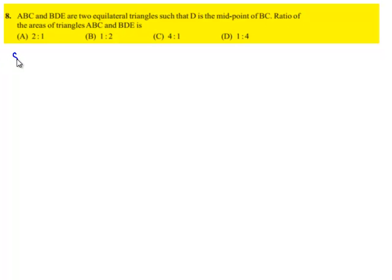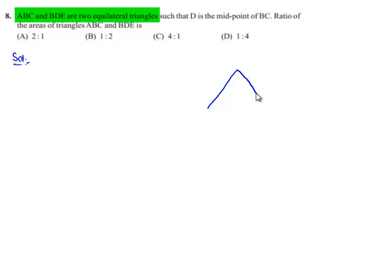Now moving on to solution. We have a triangle ABC, an equilateral triangle in which AB is equal to BC is equal to CA, and D is the midpoint of BC. Triangle BDE is formed such that it is also an equilateral triangle.